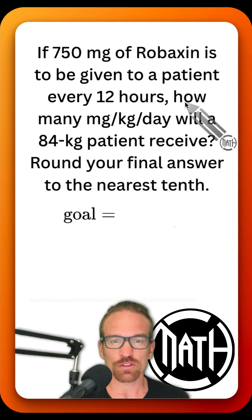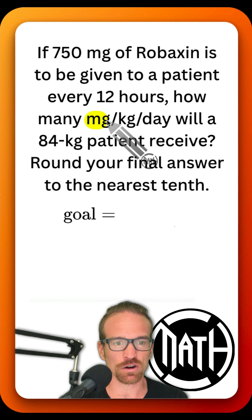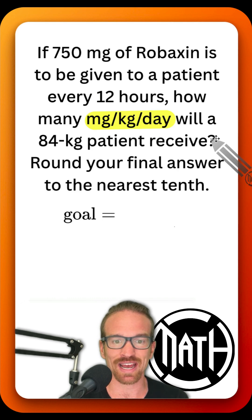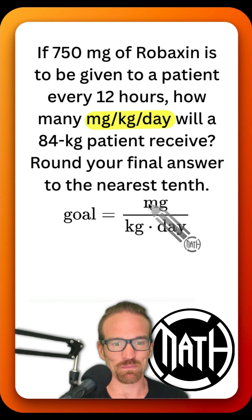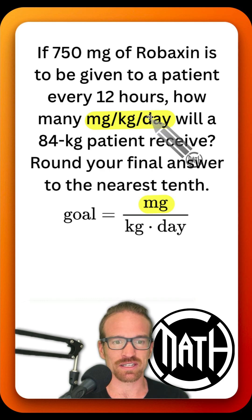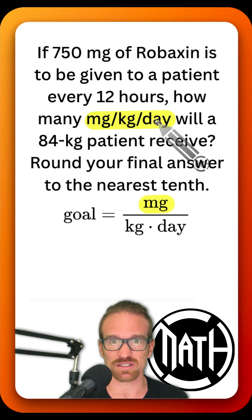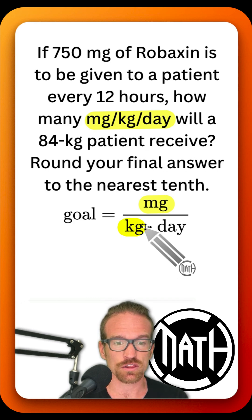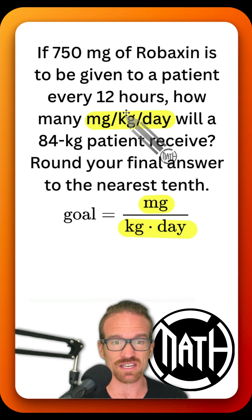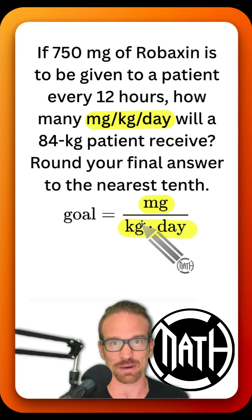Looking back at our problem, the question is asking how many milligrams per kilogram per day will the patient receive? So there's our goal. Notice with the kilogram and the day — I call this the double slash — and we are essentially trying to build this double slash in our dimensional analysis. Whatever these two words are, I'm going to put them both at the bottom.